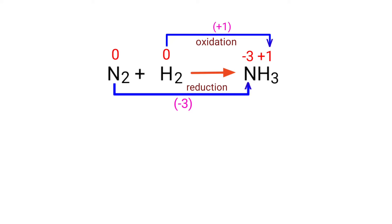In the H2 element, there are 2 hydrogen atoms present, so total increase in oxidation number is plus 2. In the N2 element, there are 2 nitrogen atoms present, so total decrease in oxidation number is minus 6.